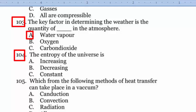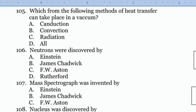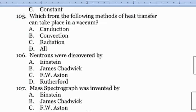The entropy of the universe is increasing, option A. Which from the following method of heat transfer can take place in a vacuum? Three methods: conduction, convection, and radiation. In vacuum, radiation. Correct option C.